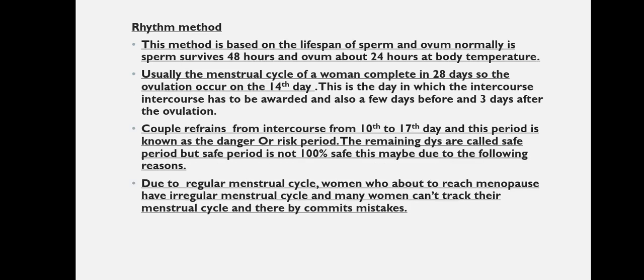The next method is the rhythm method. This method is based on the lifespan of the sperm and ovum. The lifespan of sperm is almost 2 days or 48 hours, and that of the ovum is 1 day or 24 hours at body temperature. Usually the menstrual cycle of a woman completes in 28 days or about 30 days, varying from woman to woman. Ovulation occurs on approximately the 14th day, so there is a high chance of pregnancy if intercourse occurs during these days.